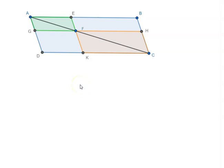Let us look at proposition number 24 of Book 6 of Euclid's Elements. The proposition says: in any parallelogram, the parallelograms about the diameter are similar both to the whole and to one another.